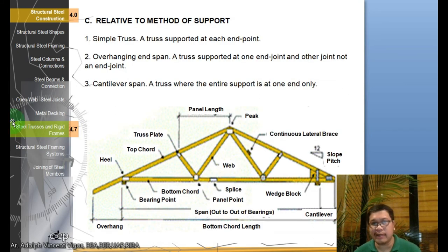Relative to the method of support, you have a simple truss supported at each endpoint. Then you have an overhanging end span, a truss supported at one end joint and the other not an end joint. Your clue is that one side is not supported, so it looks like it's hanging. Then you have a cantilever span, a truss where the entire support is at only one end.